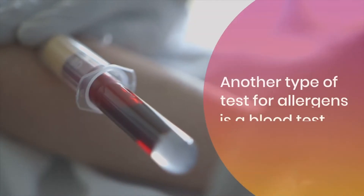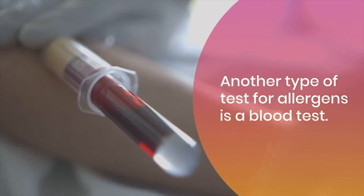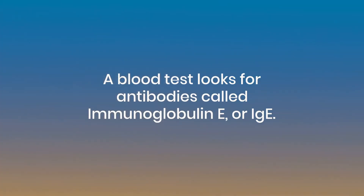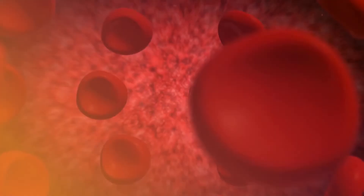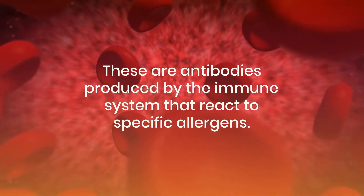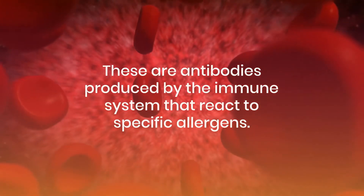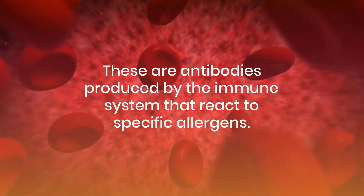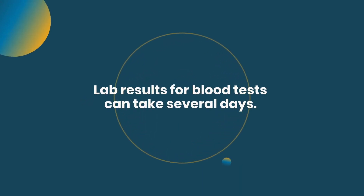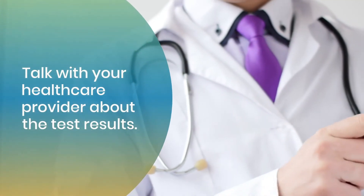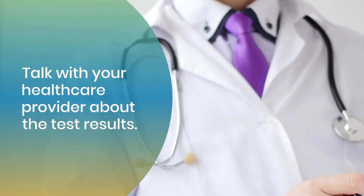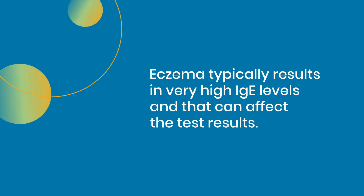Another type of test for allergens is a blood test. A blood test looks for antibodies called immunoglobulin E, or IgE — antibodies produced by the immune system that react to specific allergens. Lab results for blood tests can take several days. Talk with your health care provider about the test results, as eczema typically results in very high IgE levels and that can affect the test results.